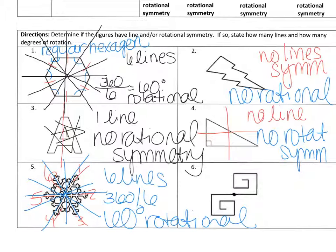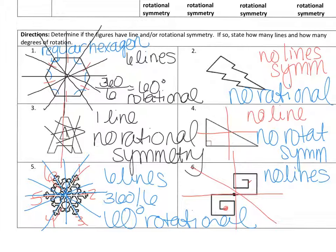The last figure — looking at lines of symmetry, if we try to cut it in different directions, the interior pieces would not line up, so this one has no lines of symmetry. However, if we rotate it 180 degrees, this whole exact pattern would be the same. So this figure has rotational symmetry of 180 degrees.